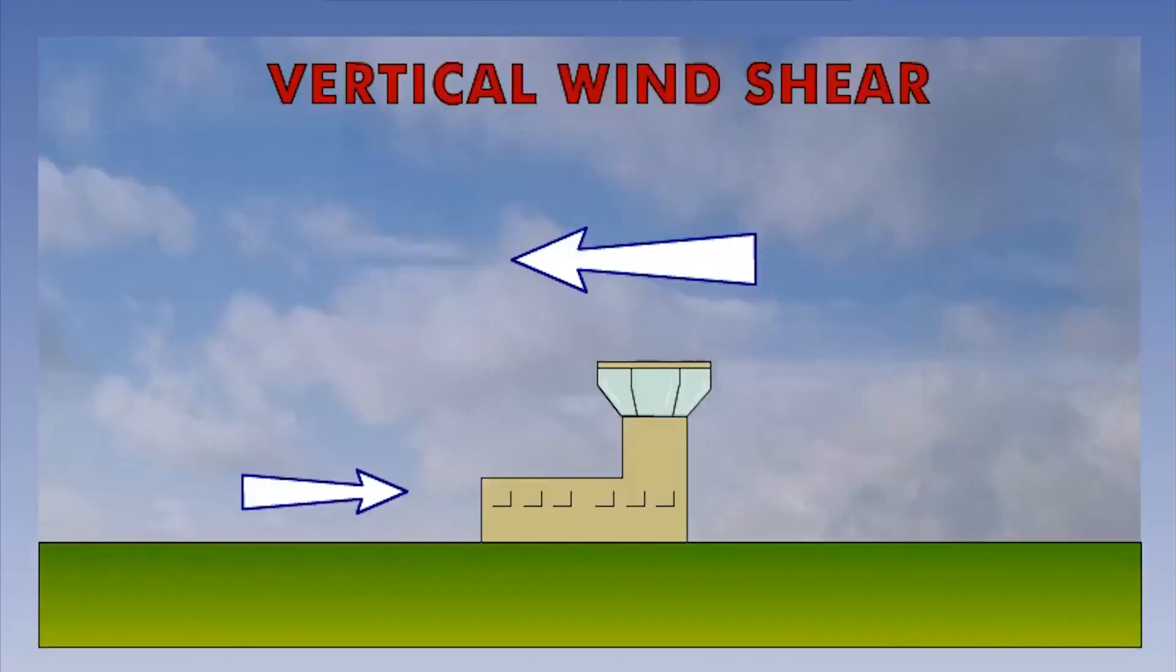Strictly speaking, windshear is the rate of change of the wind velocity in space and is to be considered a vector.